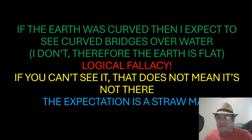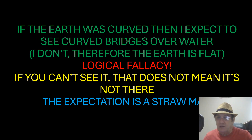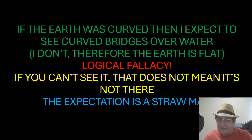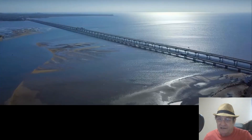So this is a bit of a logical fallacy. If you can't see the curvature, it does not mean it's not there. The expectation is a straw man, because when you analyse how much curvature you're expected to see, you come up with the answer that no, you're not expected to see it when you look at a bridge just side on, or from an aerial shot, just like something like this.